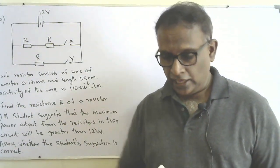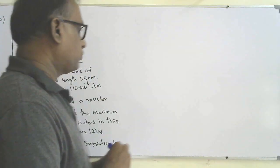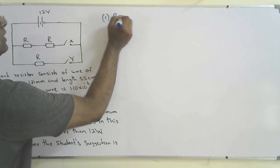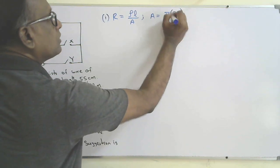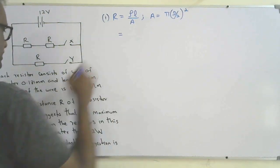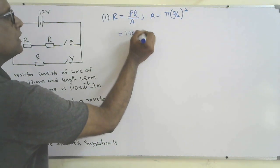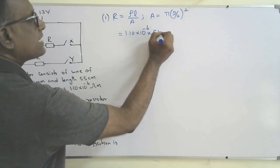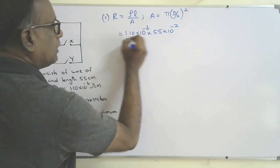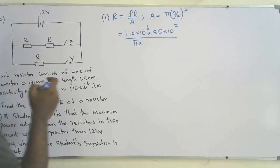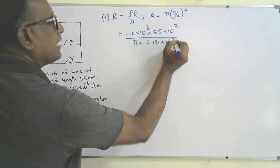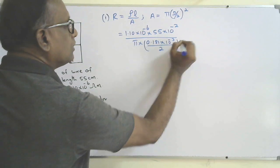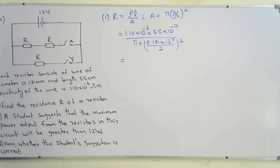Using R = ρL/A, where A equals π(d/2)². Resistivity ρ is 1.10 × 10⁻⁶, length L is 55 cm = 55 × 10⁻² m, diameter d is 0.181 mm = 0.181 × 10⁻³ m. Substituting and solving gives R = 23.5 ohms.